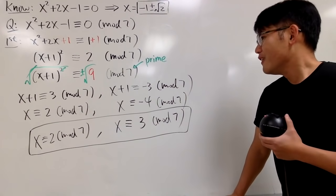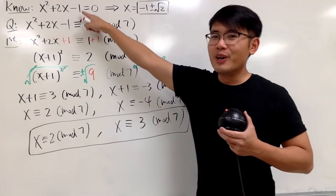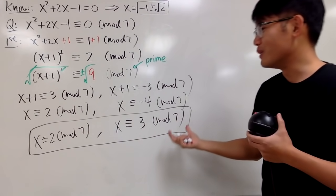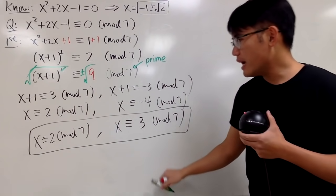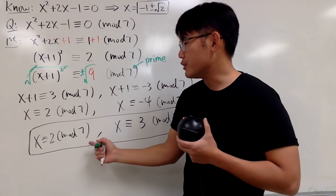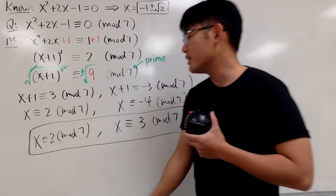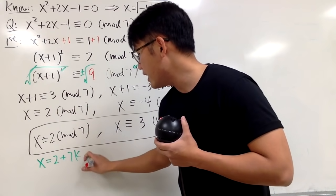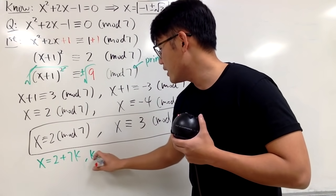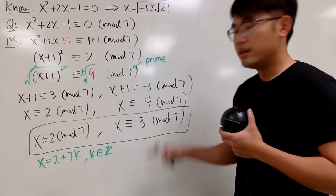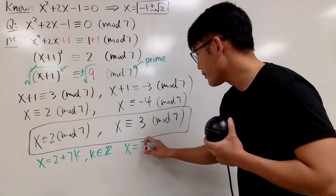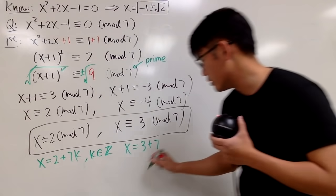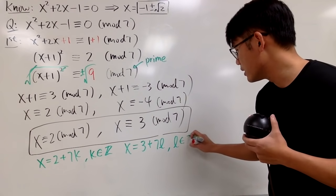x is congruent to 2 mod 7, and also x is congruent to 3 mod 7. That's it, right? Pretty cool, because as you can see, originally this equation, the answers were irrational. And now in the congruent world, you actually end up with really nice answers, right? And again, 2 is not the only answer. You can just keep adding 7 or keep subtracting 7. So the idea right here is that x is in the form of 2 plus 7k, and you have to indicate where k is an integer.